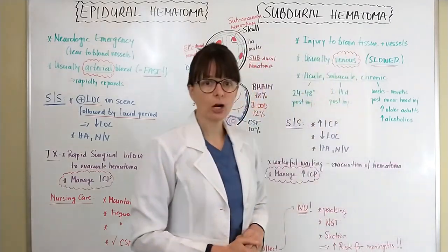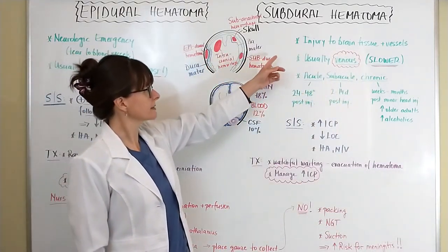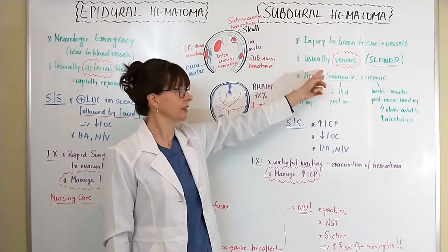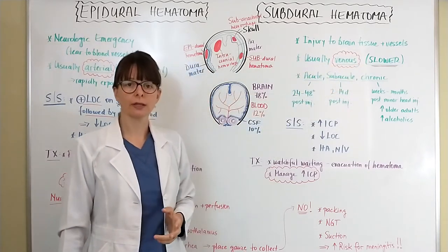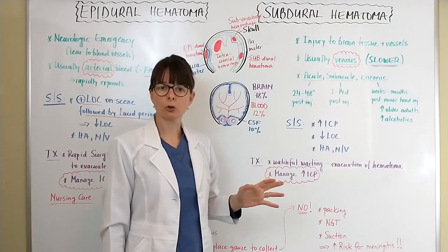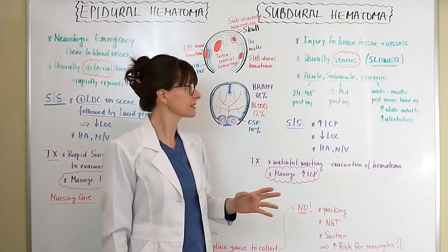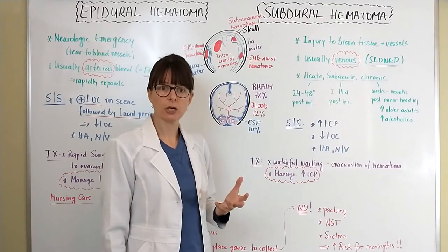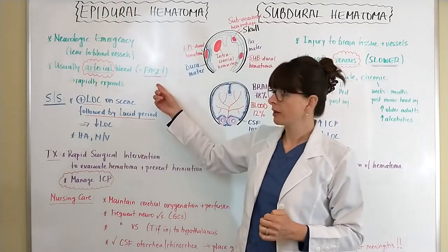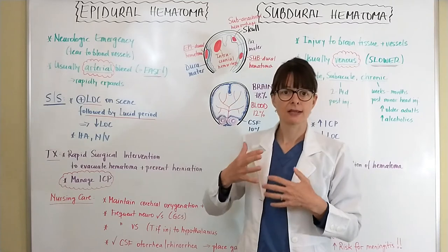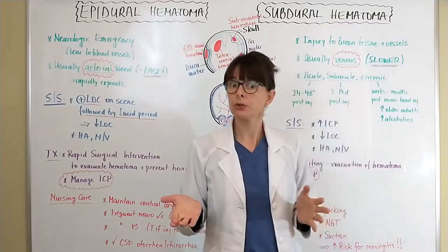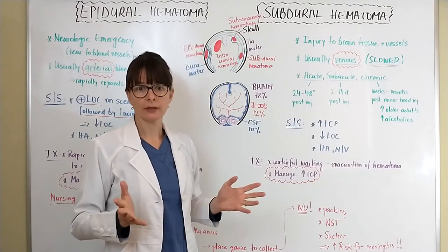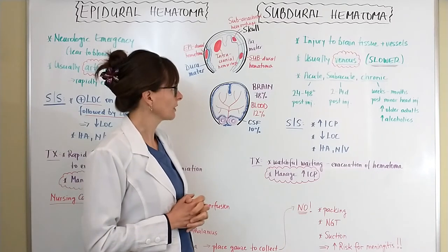In contrast, a subdural hematoma involves injury to the brain tissue and blood vessels that are usually venous in origin, meaning the bleeding occurs a bit slower. Subdural hematomas are still very dangerous, but because of the slower bleed we have a little more time to treat the patient. With an epidural hematoma — an arterial bleed that rapidly expands — we may only have an hour or two to get the patient to the OR before they become brain dead.